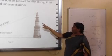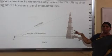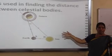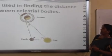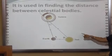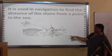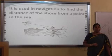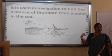For finding the height of towers, mountains, in place of this you can have anything. So you can find that height. Then finding the distance between celestial bodies. For that also, trigonometry is used. Finding the distance of the shore from a point in the ocean.